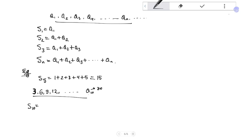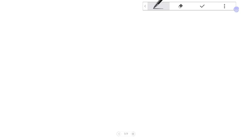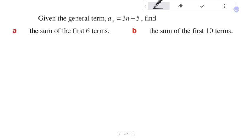S_12 equals 3 plus 6 plus 9 plus 12, and so on. The result is one hundred sixty-five.